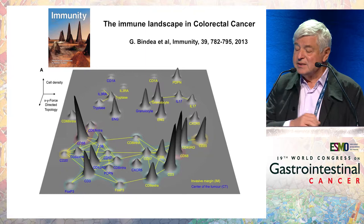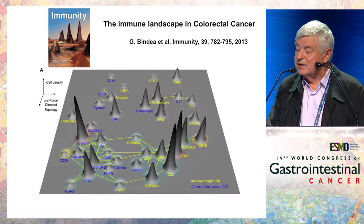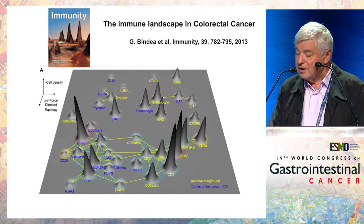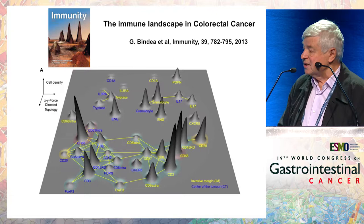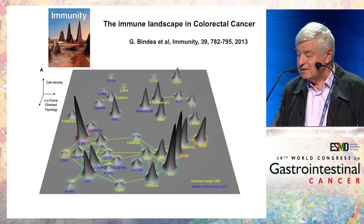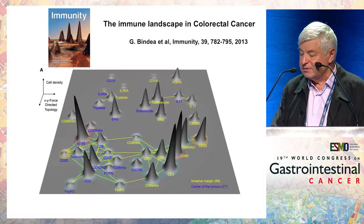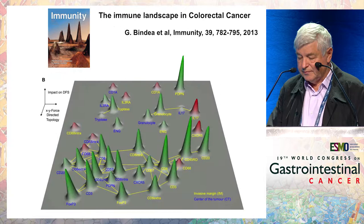However, there are not only T-cells in colorectal cancer. This is a comprehensive analysis of all immune and inflammatory cells by Gabi Binder, Jérôme Galon, and our laboratory. The higher the peak, the higher the density; blue is the center of the tumor, yellow the invasive margin. As you can see, macrophages are the first cells in terms of density, followed by T-cells. B-cells are found associated with tertiary lymphoid structures, then immature dendritic cells, mast cells, and IL-17 pro-inflammatory producing cells.